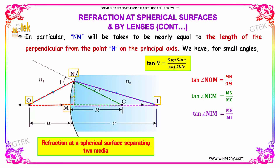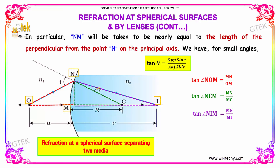In particular, NM will be taken to be nearly equal to the length of the perpendicular from the point N on the principal axis. For small angles, tan theta is equal to opposite side divided by adjacent side. So for triangle NOM, the angle is MN divided by OM. For triangle NCM, we get NM divided by MC. For triangle NIM, opposite side MN divided by adjacent side MI.